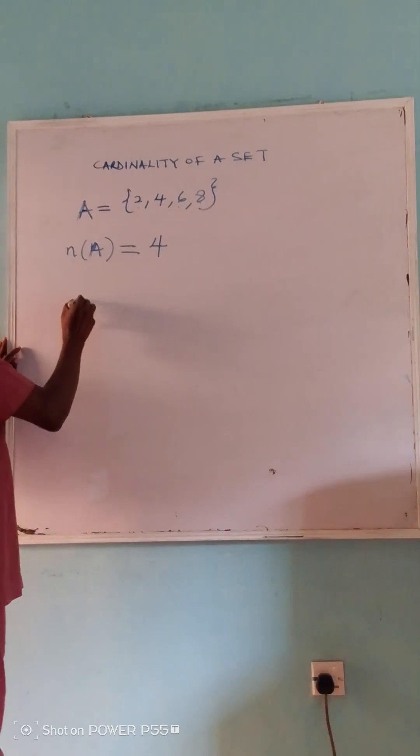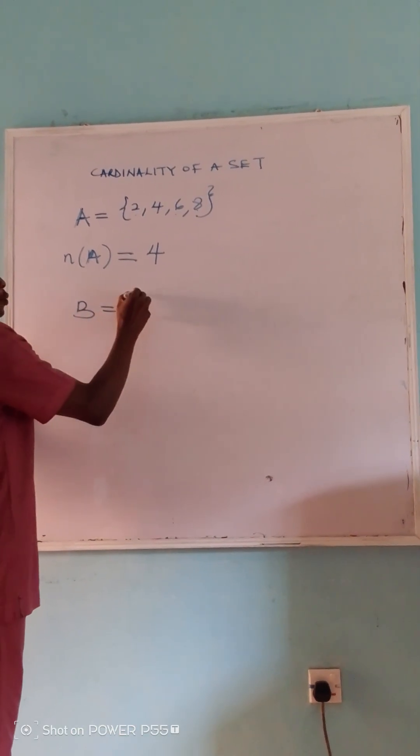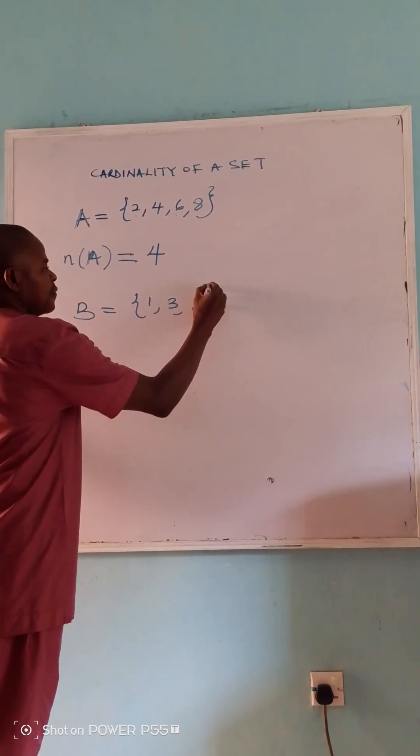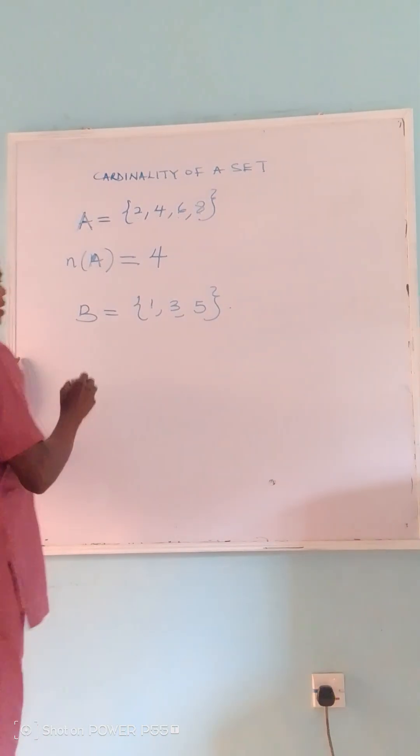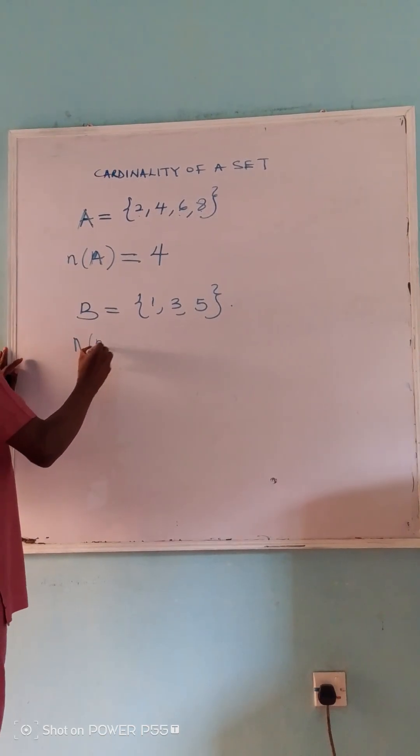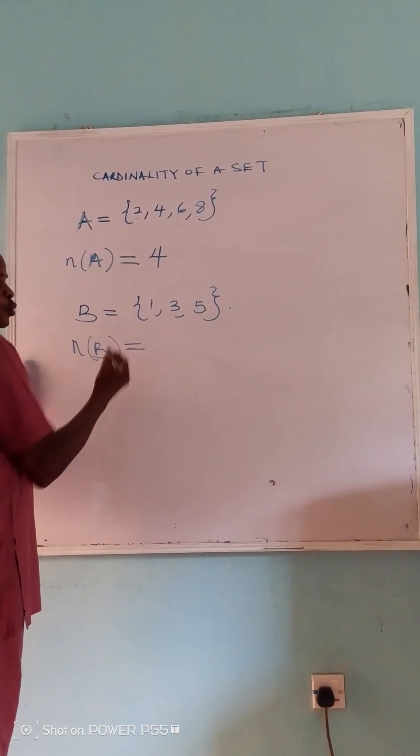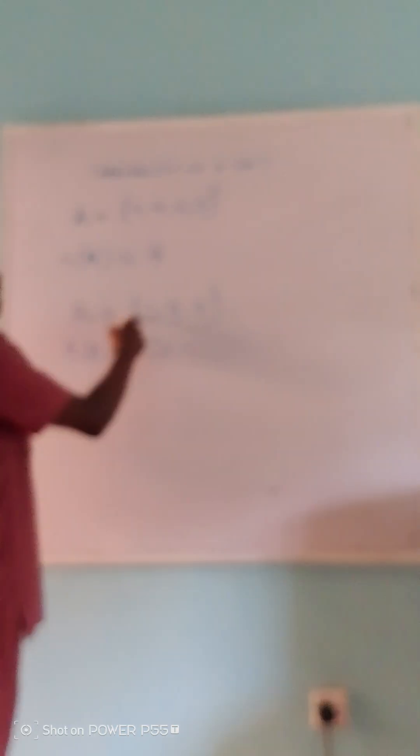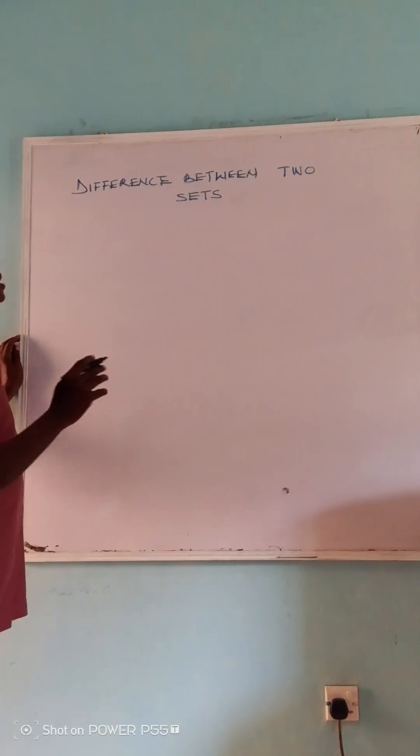Another example: if B is equal to {1, 3, 5}, the cardinality of B will be equal to 3, since I have 3 elements in B.